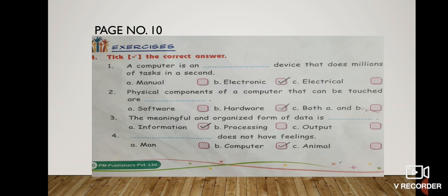Second, physical components of a computer that can be touched are hardware. It is not software, not both A and B. It is B, hardware. The meaningful and organized form of data is information. A, information. Dash does not have feelings. B, computer.